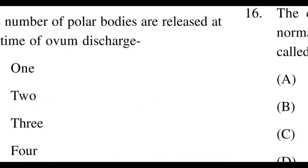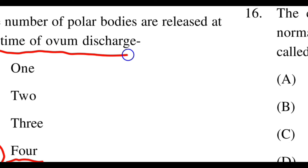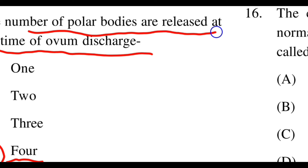Next question: The number of polar bodies released at the time of ovum discharge? Options: A: 1, B: 2, C: 3, D: 4. The right option is D, 4. Four polar bodies are released at the time of ovum discharge.